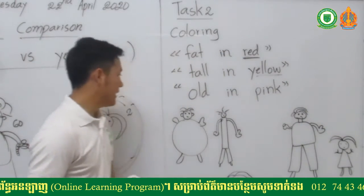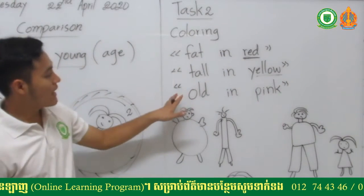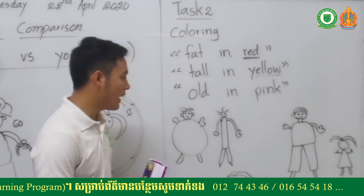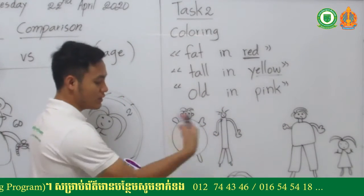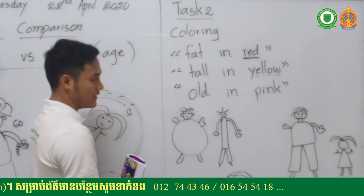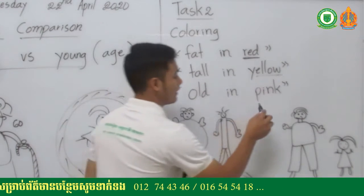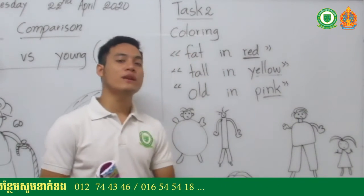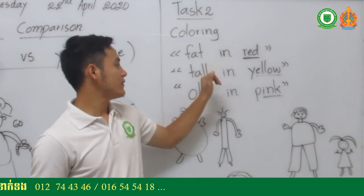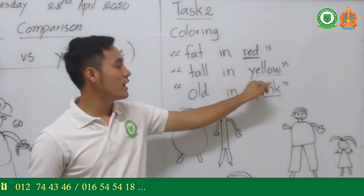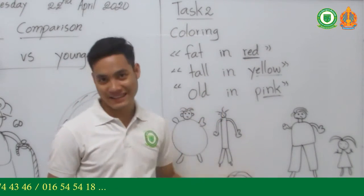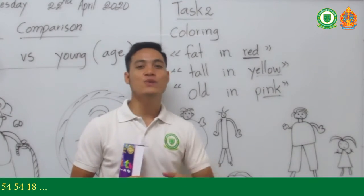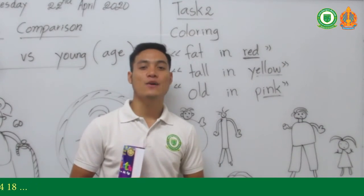The last instruction: old — color in pink. Find the picture of the old person and color it pink. Remember the three colors: fat in red, tall in yellow, and old in pink. That's all for part two — see you in the last video.